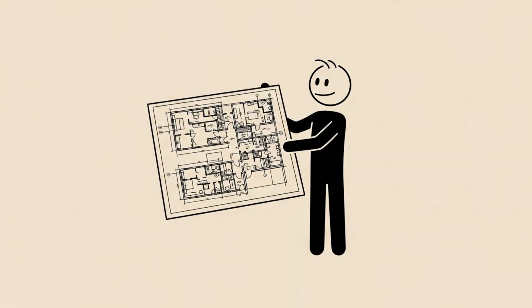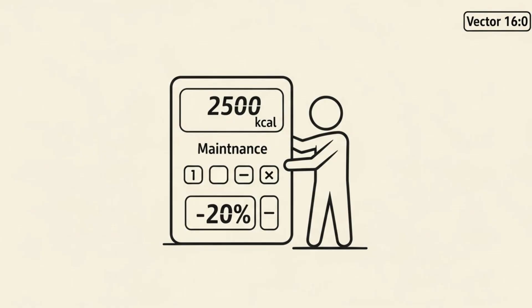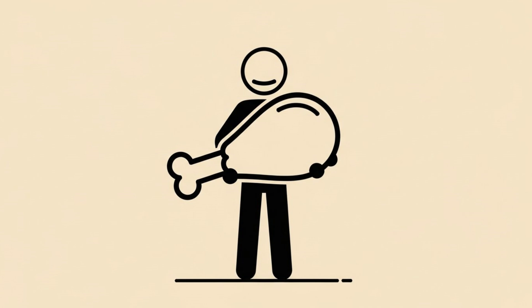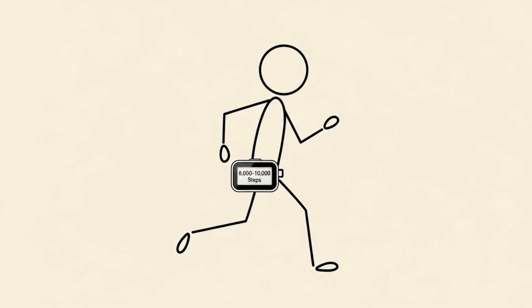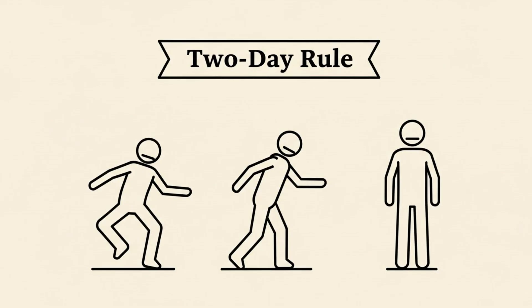So here is your blueprint. Calculate your maintenance calories and subtract 20%. Prioritize protein, aiming for nearly a gram per pound of body weight. Swap high-calorie-dense foods for high-volume, nutrient-dense foods. Walk 8,000 to 10,000 steps a day. And when you mess up, use the 2-day rule to get back on track.